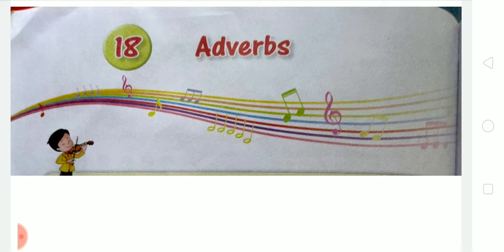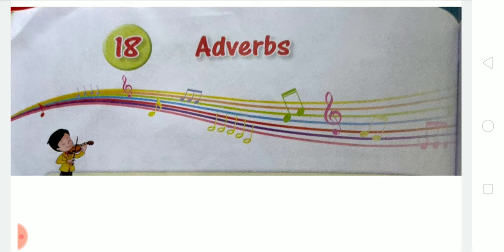An adverb of degree is an adverb that tells the intensity or degree of a verb, an adjective, or another adverb. For example: almost, absolutely, bravely, deeply, extremely, entirely, fairly, quite, fully, just, greatly, hardly, very, and completely. These are the examples of adverbs of degree. Adverbs of degree answer the question 'how much' or 'to what extent.'